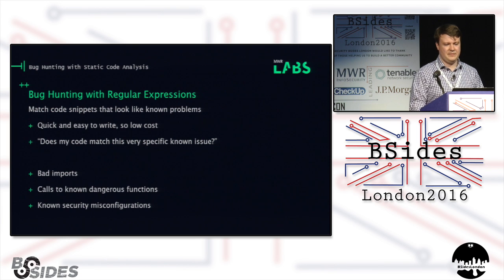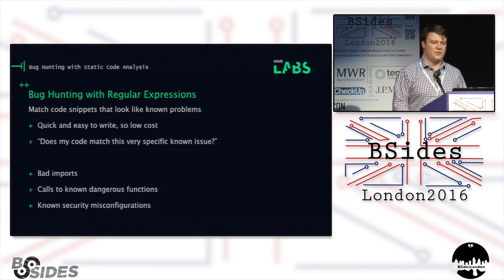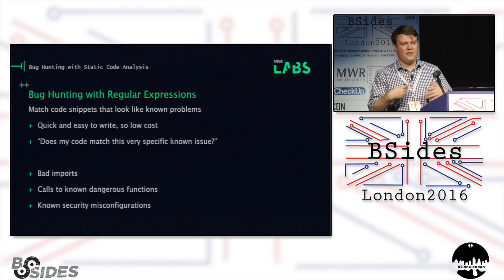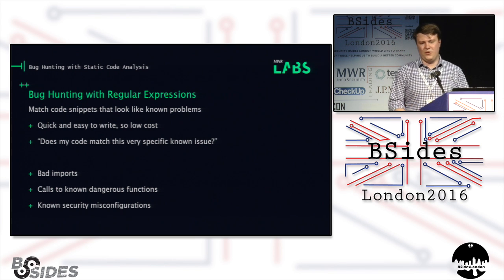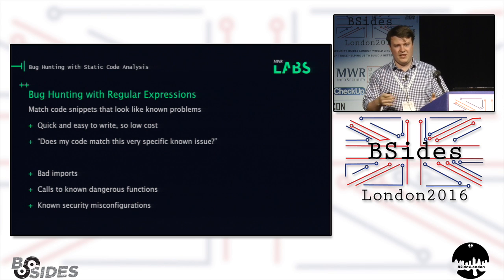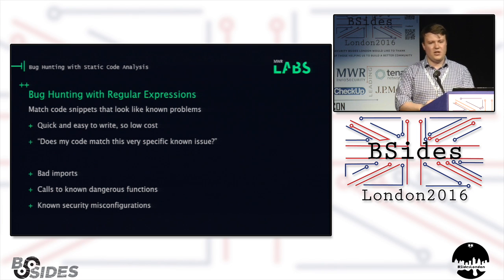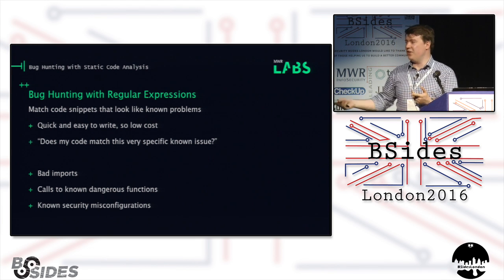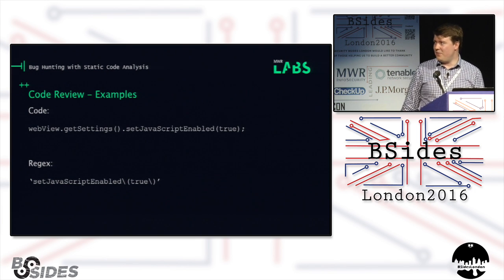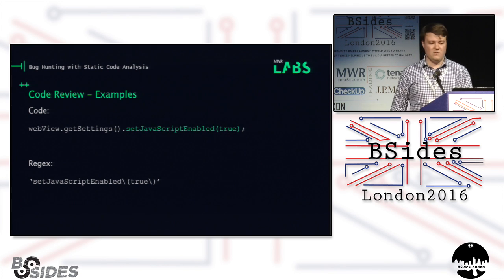How do regular expressions help us? You can match code snippets that look like problems you're already aware of. They're very quick and easy to write and comparatively low cost. If you're a security consultant wanting to get a feel for how ropey a code base is, or looking for the really obvious bugs, this is probably where you start. It boils down to: does my code match this very specific known issue I've written a rule for? Maybe someone's using bad libraries — you scan for import statements. Calls to known dangerous functions like strcpy everywhere is probably bad. And known security misconfigurations: enabling JavaScript on WebViews in Android is bad, so you write a regex looking for setJavaScriptEnabled calls, and when you run it over your code base, you find that line.